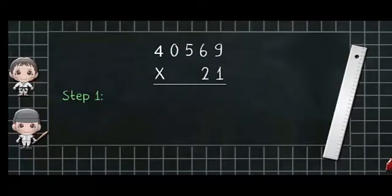Step 1: Multiply 40,569 by the 1's digit of the multiplier, that is 1. So here 9 into 1 is equal to 9 and 6 into 1 is equal to 6. Now 5 into 1 is equal to 5.